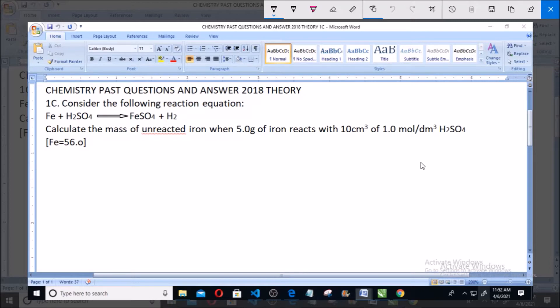Consider the following reaction equation. Iron reacted with hydrogen tetrautrophic acid, giving iron sulfate plus H2. Calculate the mass of unreacted iron when 5.0 gram of iron reacts with 10 cm cube of 1.0 mol per dm cube hydrogen tetrautrophic acid. Given iron is equal to 5.0 gram.